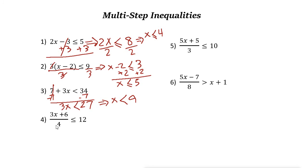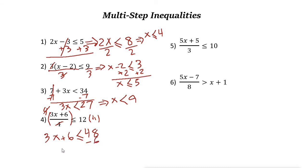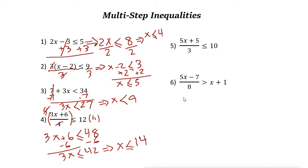Next one: when you have a fraction, it means divided by 4 for the whole expression. To make the process easier, multiply both sides by 4. These two 4s cancel out, so it becomes 3x plus 6 less than or equal to 12 times 4, which is 48. Now subtract 6 from both sides, giving 3x less than or equal to 48 minus 6, which is 42. The next step: divide both sides by 3, so x less than or equal to 42 divided by 3 is 14.